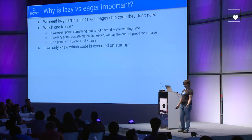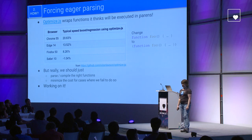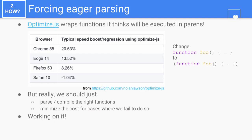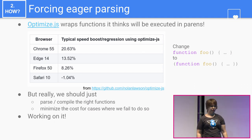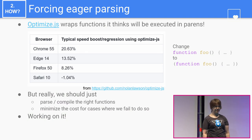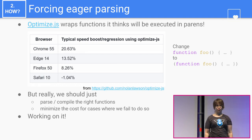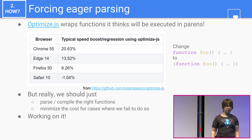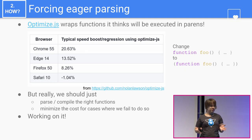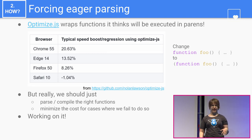The problem is knowing what code is executing on start-up. You can force eager parsing by wrapping critical functions in parens — that forces eager parsing and compilation. There is a library called optimize.js that does this, adding parens around functions that should be eager, resulting in speed-ups across most browsers. But really, we should just parse and compile the right functions without depending on parens in funny places in your code, and we should also minimise the cost for cases where we get the guess wrong.